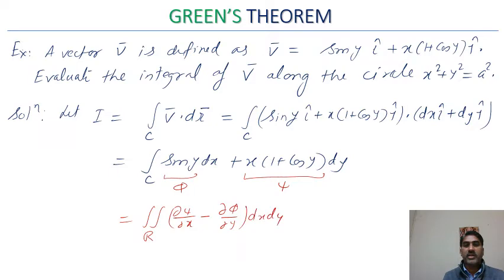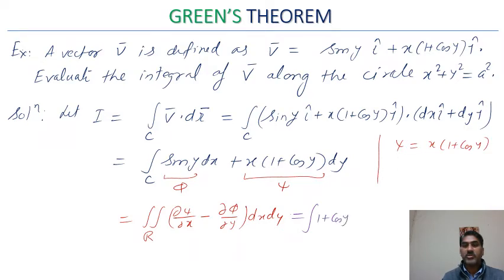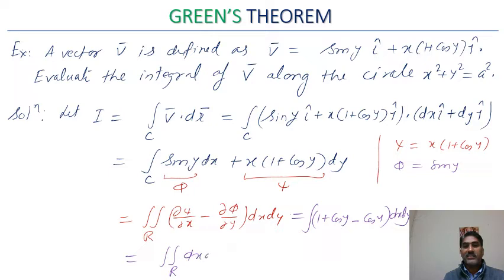This is equivalent to a double integral over the region R bounded by the circle, which is a disk. We compute ∂Ψ/∂x − ∂Φ/∂y: since Ψ = x(1 + cos y), ∂Ψ/∂x = 1 + cos y. Since Φ = sin y, ∂Φ/∂y = cos y. So we get ∬(1 + cos y − cos y) dx dy = ∬ 1 dx dy, which is just the area of the circle = πa². This is how Green's theorem simplifies the problem.